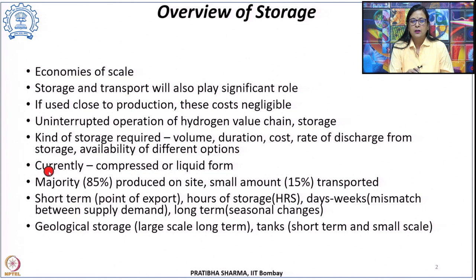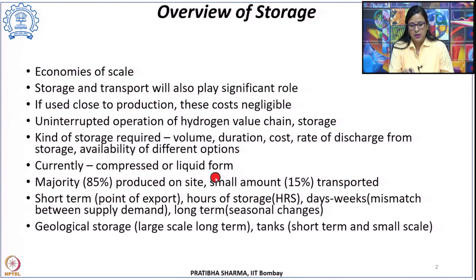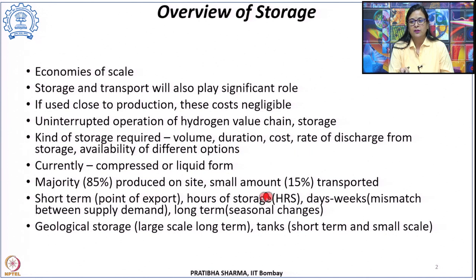Currently, most hydrogen is being stored in its compressed form or in its liquefied form, usually in tanks for stationary and mobile applications. Currently, 85 percent of the total hydrogen being produced is utilized on-site. Only a small amount — 15 percent — is being transported, and that transportation is done by means of either trucks or pipelines.